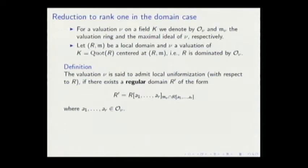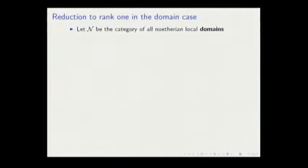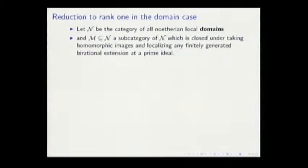But what we do is the reduction. So now we have to consider a category of all Noetherian local domains. It's known that local uniformization cannot hold for this whole category. So I have to take a subcategory with minimal conditions: that they are closed under taking homomorphic images and localizing at prime ideals in finitely generated rational extensions.